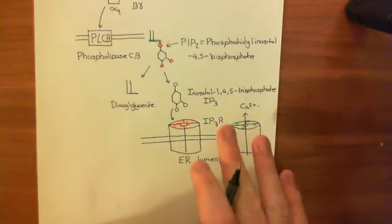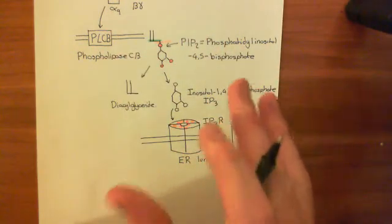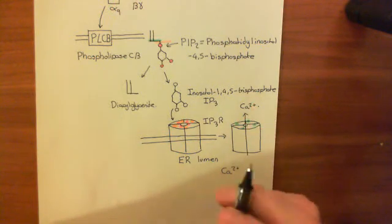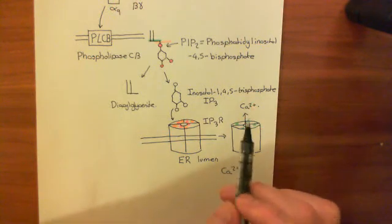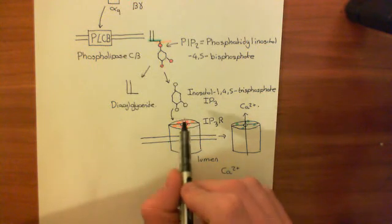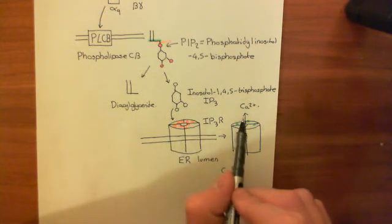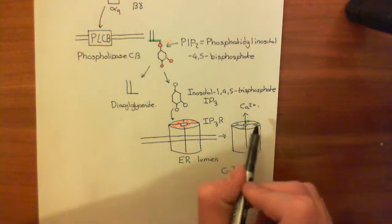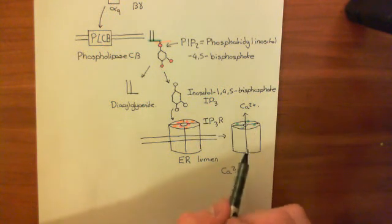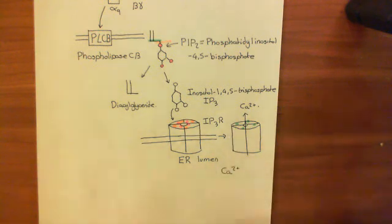At the moment we haven't seen how this leads to oscillations in calcium. What will happen is that we'll get oscillatory levels of IP3, and therefore oscillatory levels of primed IP3 receptors, oscillating between the IP3 receptor being open and closed — and that will lead to the calcium oscillations. We'll see that in the next video.